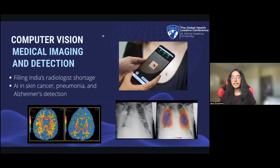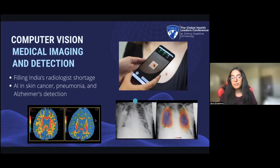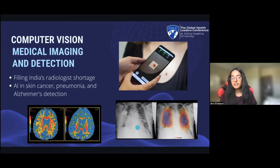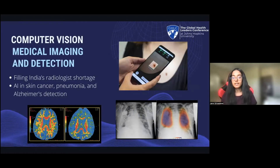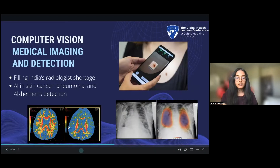AI has a lot of potential in the medical field. All three of these images show examples of how AI is being used for early detection of many different conditions. For example, an AI tool that can identify pneumonia can be especially helpful for areas with a shortage of radiologists, such as in a developing country like India, and AI can do some of the heavy lifting. The same thing applies for other conditions like skin cancer or Alzheimer's.